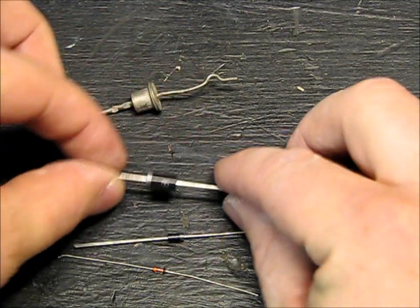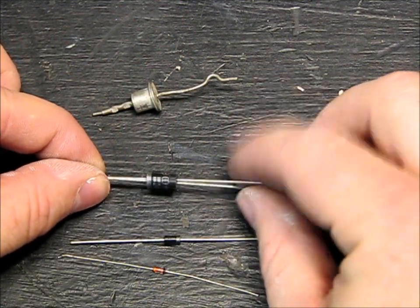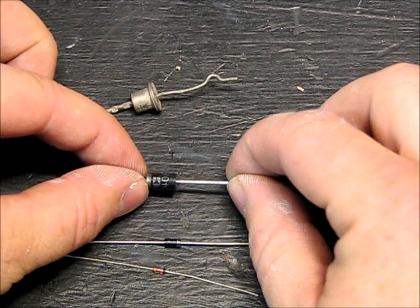However, if you turned it around and hooked positive to this side, negative to this side, the current would not go through.